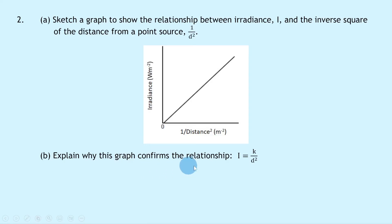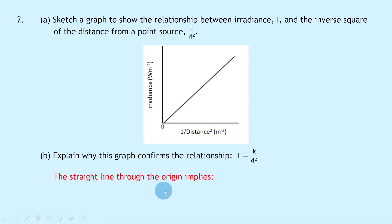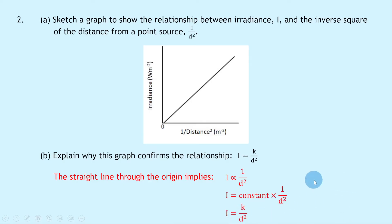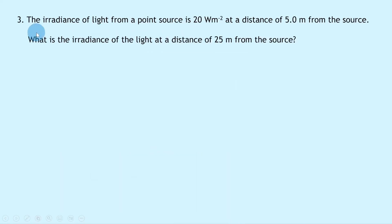Part b says to explain why this graph confirms the relationship I = k/d² where k is a constant. The straight line through the origin implies that I is directly proportional to 1/d². To remove the proportionality sign, we multiply by a constant k, giving I = k × (1/d²), or in other words I = k/d², where k is our constant.